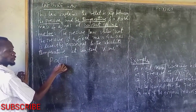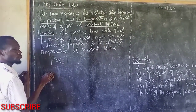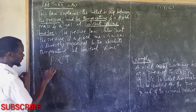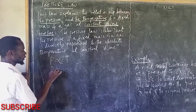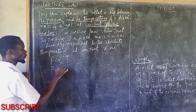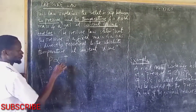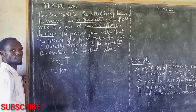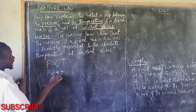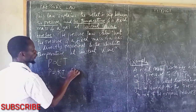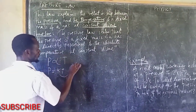Removing the proportionality, the constant at constant volume gives P is equal to KT, where this constant K relates to volume.